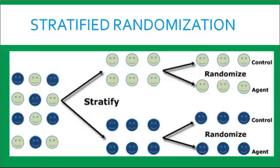Sometimes we have stratified randomization, where first there's some stratification of putting people into two different categories. For example, we may stratify by age, having younger people in one group and older people in another, and then we randomize after the stratification happens. This ensures that within each stratum the randomization is even. We may also look at males versus females, wanting even numbers of males and females within each of the two different groups.